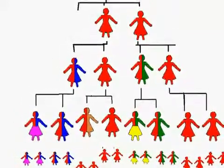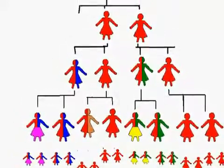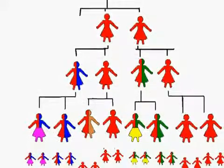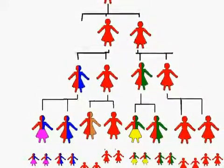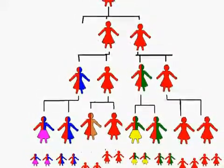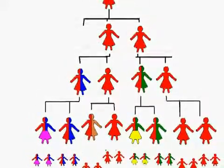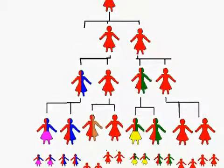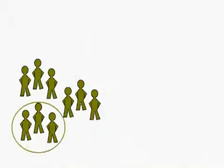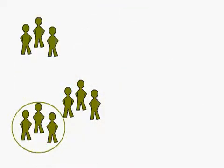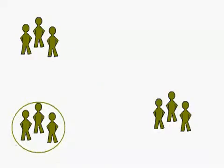So if we find a marker in people today, we can trace it back through thousands of generations to find out when and where it started. Now imagine if all these people were migrating. This group stays put, this group moves north, and in this group headed east, a baby boy is born with a unique marker on his Y chromosome.